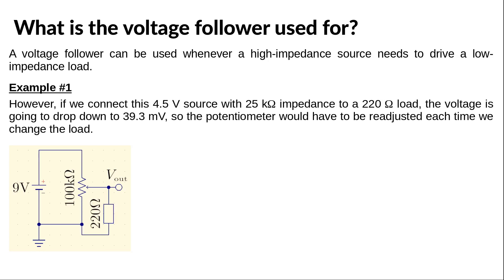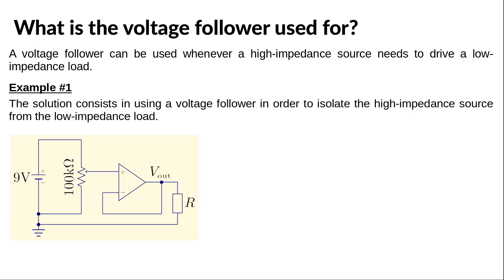Suppose now that we want to apply these 4.5V to a load symbolized by a 220 Ω resistor. This resistor and the 25 kΩ output impedance of the potentiometer form a new voltage divider. The voltage on the load is going to drop down to 39.3 mV, much lower than the intended 4.5V. This means that the potentiometer has to be adjusted, and we would have to do so each time we use a load with a different impedance.